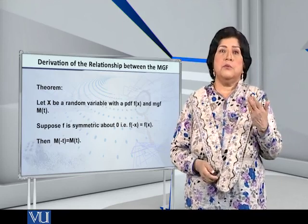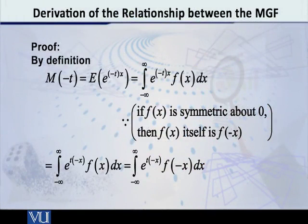All right, let's start the proof. We start from the left-hand side and we start by the basic definition of the MGF. M(t) is the expected value of e raised to TX. So M of minus T will be the expected value of e raised to minus T into X. So the expected value, if that thing itself is pertaining to a continuous variable, then what is the expected value? It is the integral from minus infinity to plus infinity of that entity into f(x). So here, M(-t) is equal to the integral from minus infinity to infinity, e raised to minus TX into f(x).